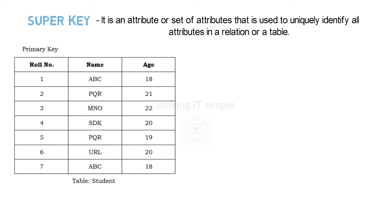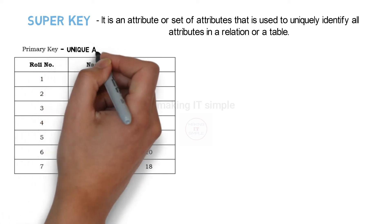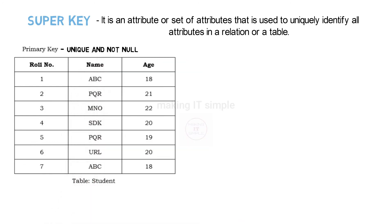There is a student table of a particular class. It has attributes like role number, name, and age. Role number is the primary key, which is unique and not null.